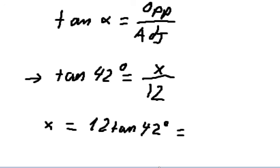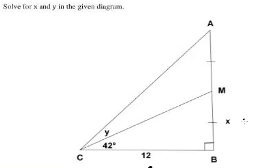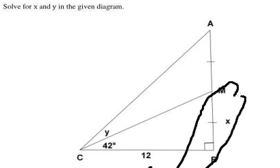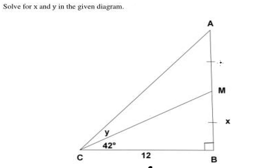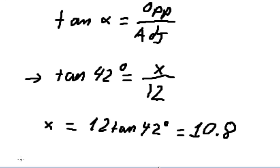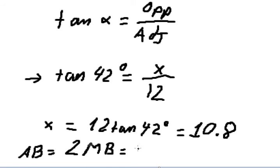So x is approximately 10.8. Now we know that MB equals AM, which means we can find the value of AB. AB equals MB multiplied by 2. Since MB is about 10.8, we get AB equals 21.6.